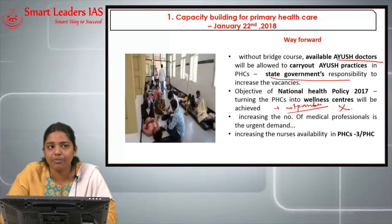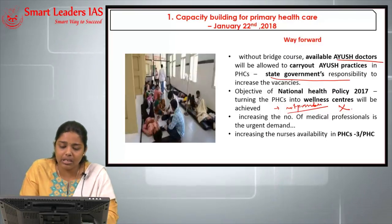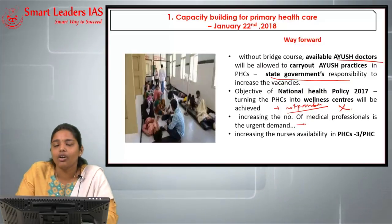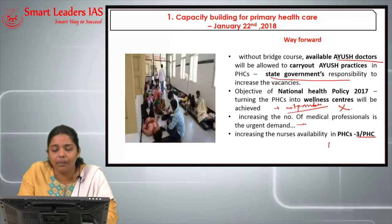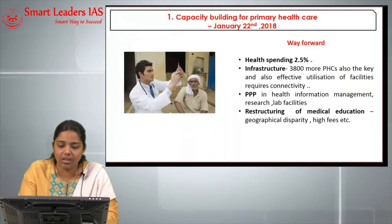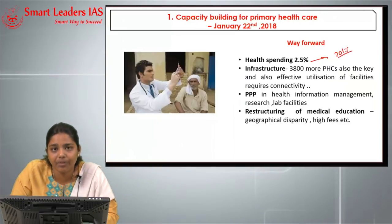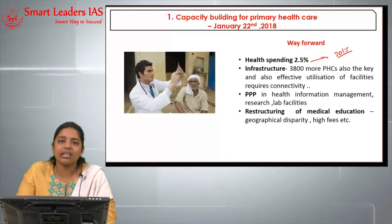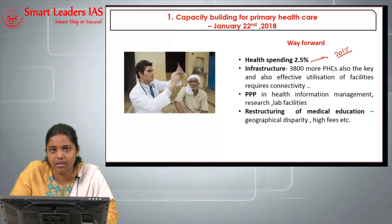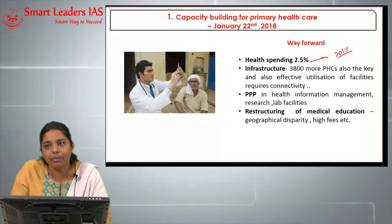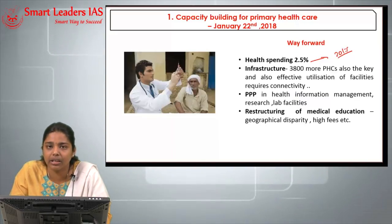The number of modern medicine professionals is inadequate and supply needs to increase urgently. Nurse availability in primary health care centers needs to be tripled — currently there is only one nurse per PHC. On the financial side, the National Health Policy 2017 aims for 2.5% of health spending by 2025, and this needs implementation from the budget. On infrastructure, we have around 27,700 primary health care centers but are short of more than 3,800. More PHCs need to be opened, and connectivity — both digital and physical — to deeper and remote areas is critical.